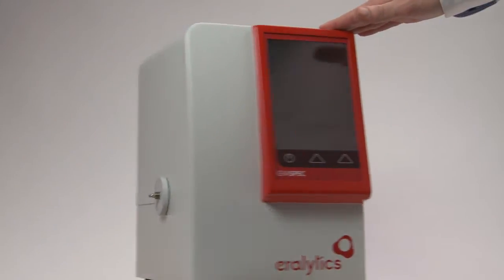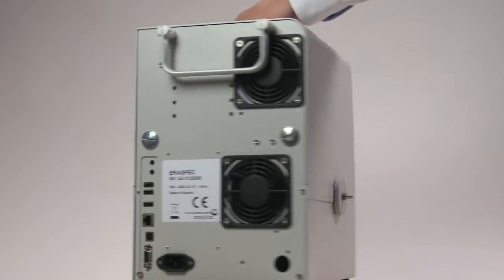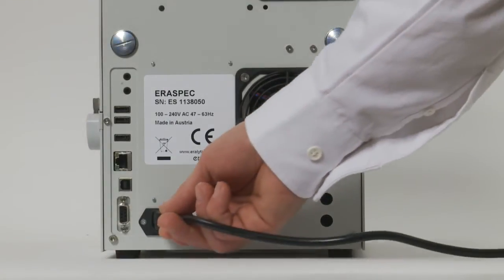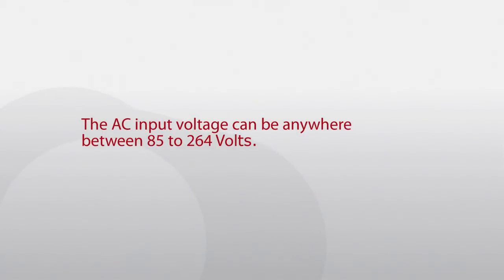Turn the instrument and connect the power cable to the plug on the rear side of the instrument. The AC input voltage can be anywhere between 85 and 264 volts.